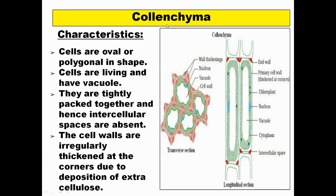Now comes collenchyma. When the word collenchyma comes to your mind, always remember corner wall thickening. The cells have corner wall thickening made up of cellulose — visible as red-colored structures at the corners. They are referred to as collenchyma. The shape can be oval, polygonal, or various kinds, but they have a centrally located vacuole and are tightly packed together with intercellular spaces almost absent. The cell walls are quite irregular because of the corner wall thickening made of cellulose, visible in both transverse and longitudinal sections.